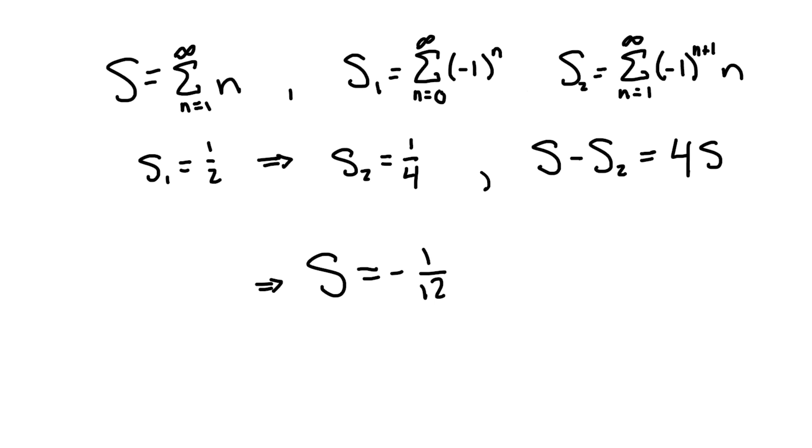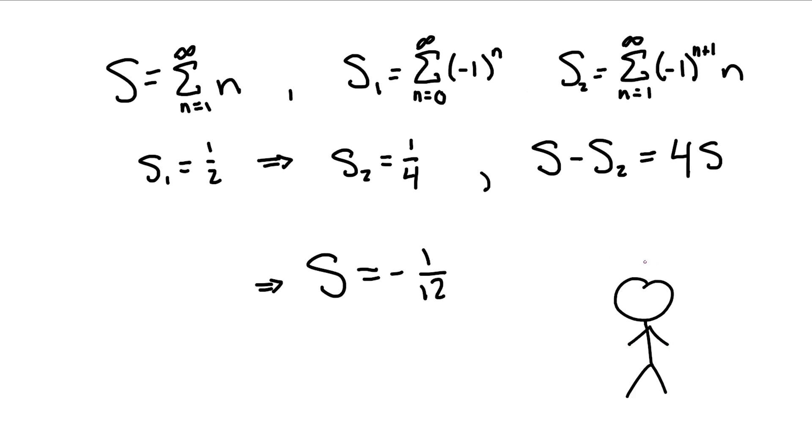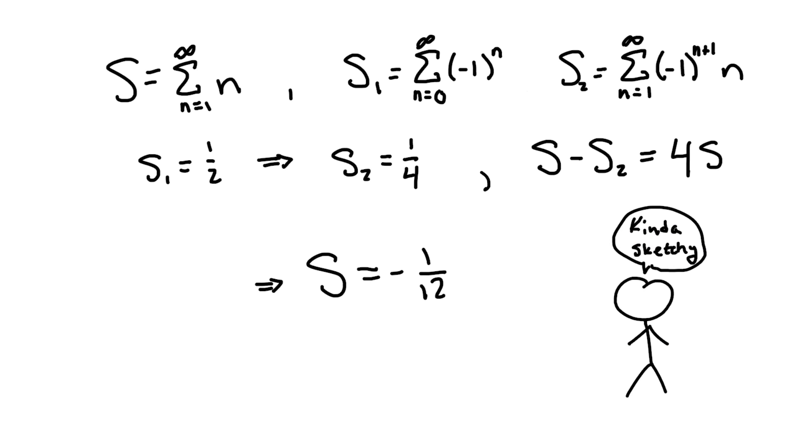Okay, so if you've seen this sum before, you've probably seen this weird property show up by adding and subtracting a bunch of different sums. While I won't go so far as to say this is wrong, it's certainly misleading, since doing pretty much anything with sums like this is typically a big mathematical no-no.